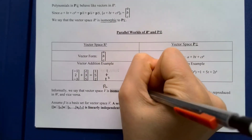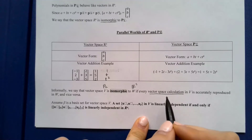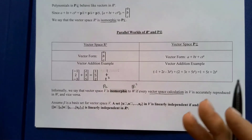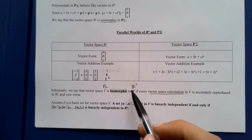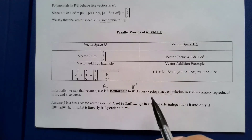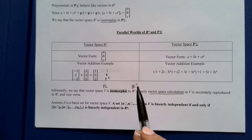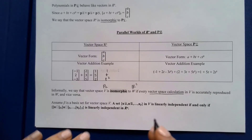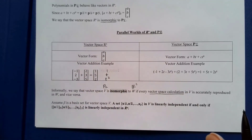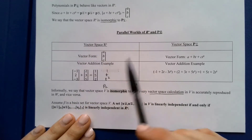This means we say that a vector space V — say P2 — is isomorphic to another vector space W — say R3 — if every vector space calculation is accurately reproduced in the other space. Even though we can multiply two polynomials (which we can't do to vectors in R3), they can still be isomorphic, because the only requirement is that the vector space operations are preserved: scalar multiplication, vector addition, the zero vector, and so on.